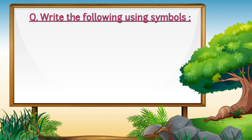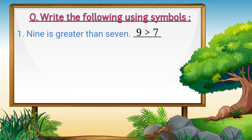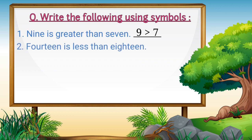Write the following using symbols. Here children, we have to read the sentences carefully and write them using symbols. First example, we have 9 is greater than 7. Which means, between 9 and 7, Mr. Coco will open his mouth towards number 9, and the closed part will face towards number 7. Next, we have 14 is less than 18. 14 is less, which means between 14 and 18, Mr. Coco's mouth will open towards number 18, and the closed part will face towards number 14.